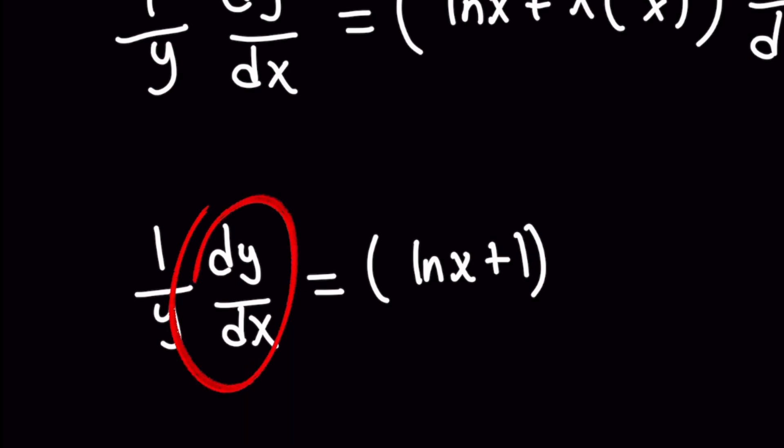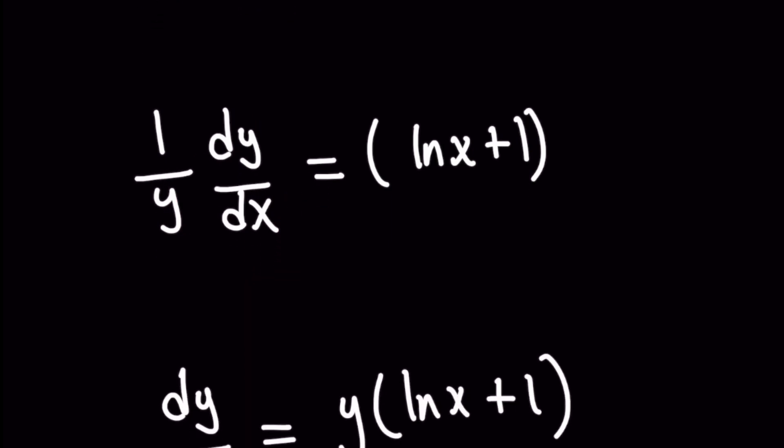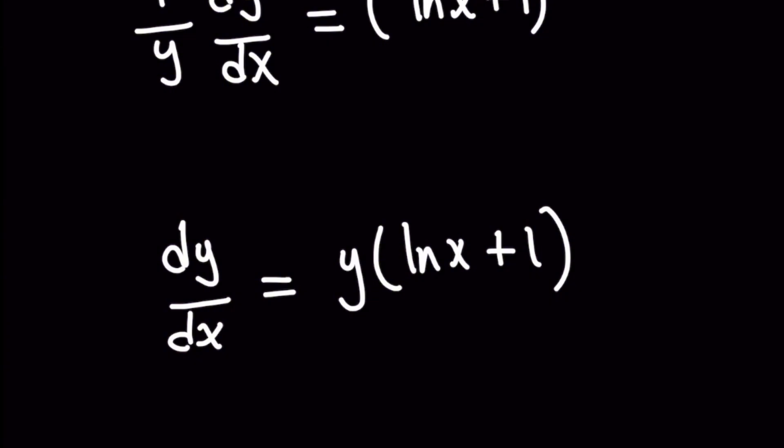So go ahead and just multiply both sides of the equation by y, and this is going to give you a new expression: y times (ln x + 1).